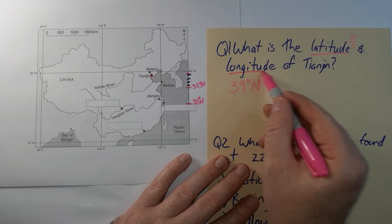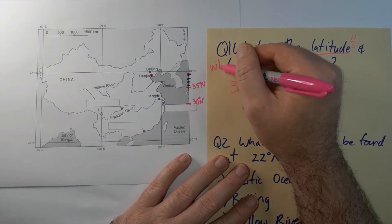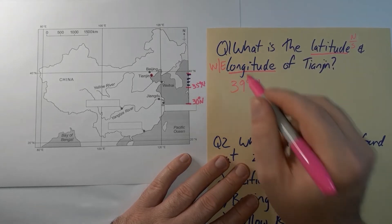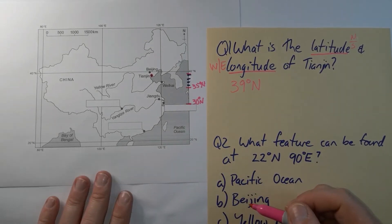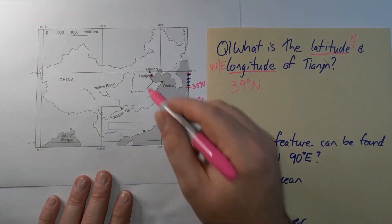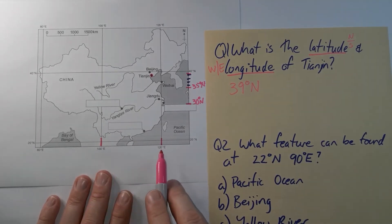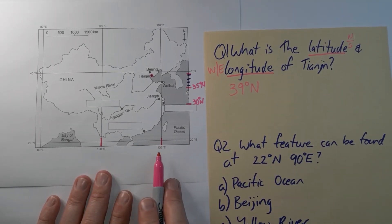The next thing I look at is the longitude and remember these are the vertical lines and we're looking at east or west for longitude. So if I look at the two longitude lines that Tianjin sits between, that's the 100 and 120 line, I can see it's very much closer to the 120.